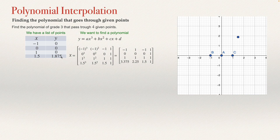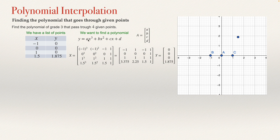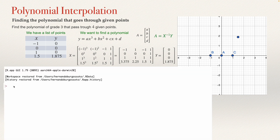We also have the vector Y, which contains the y values: 0, 0, 0, 1.875. The vector of coefficients A = [a, b, c, d] — the coefficients in order from the highest to the lowest power of x — can be found using the formula A equals the inverse of X multiplied by Y.